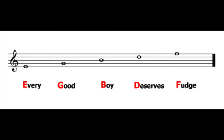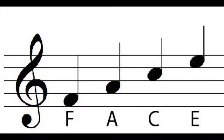For ease of remembrance, we can use the mnemonic: Every Good Boy Deserves Fanta, or Every Good Boy Deserves Fudge. That's a very good way of memorizing the lines. The spaces of the treble staff are F, A, C, and E.